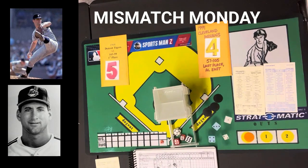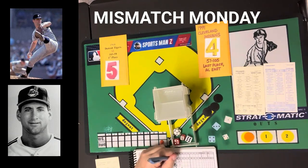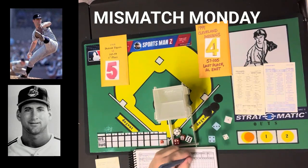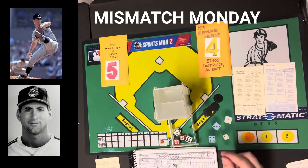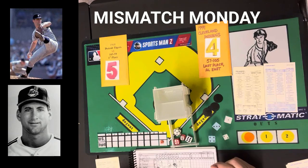The final score: the Indians lose a really close one, 5-4, to the Detroit Tigers, who went ahead with two runs in the ninth inning to take the lead. That'll be it for me — Strat-O-Matic Bob Zolke signing off.